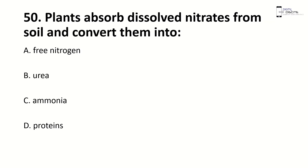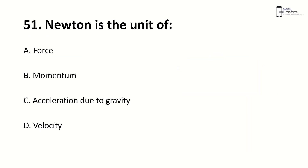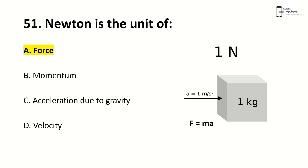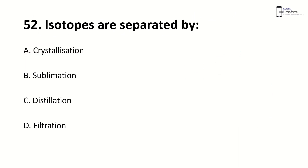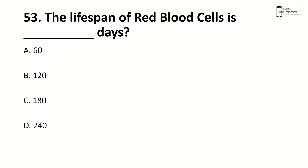Plants absorb dissolved nitrates from soil and convert them into — right answer is A, free nitrogen. Newton is the unit of — right answer is A, force. Isotopes are separated by — right answer is C, distillation. The life span of red blood cells is — right answer is B, 120 days.